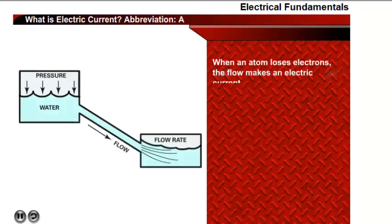When an atom loses electrons, the flow of these electrons constitutes an electric current. Using our water flow and pipe example, we can also describe current as the rate at which water exits the pipe.